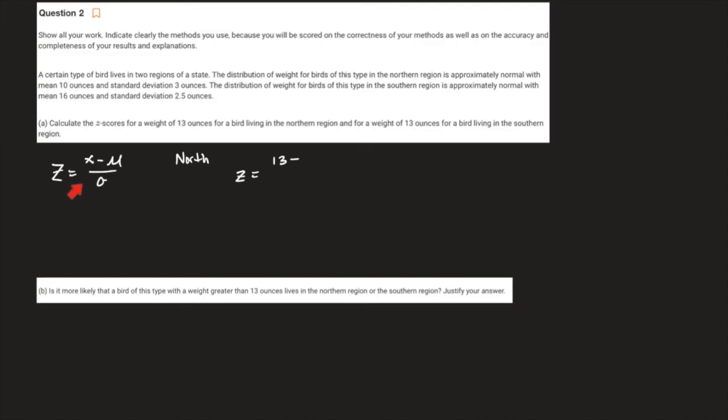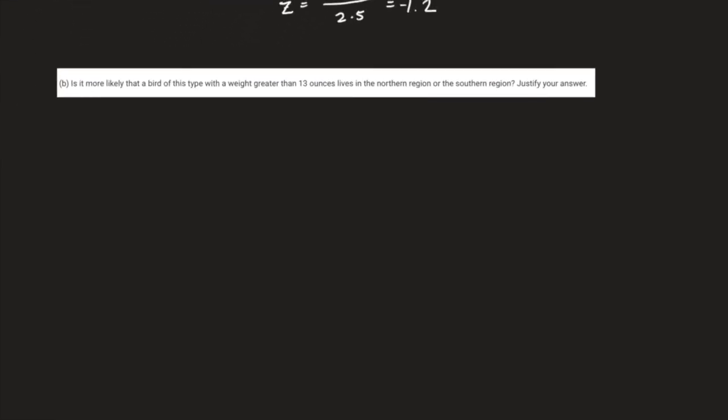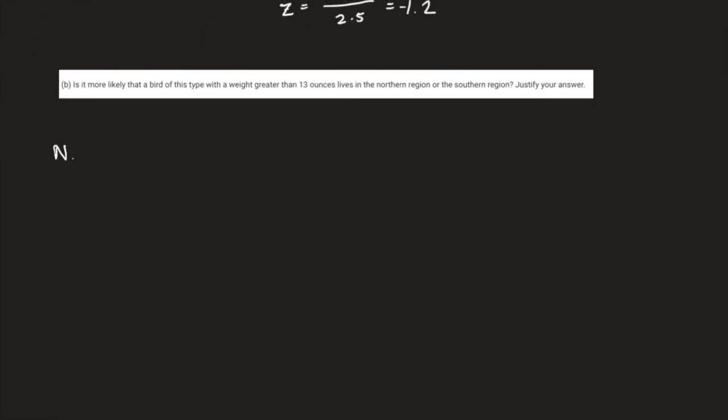You can see that right here. Then I'm going to calculate the north z-score, which would be 13 minus 10 divided by 3, which equals 1. If I bring down the southern data, we've got approximately normal with a mean of 16 and a standard deviation of 2.5. So here again, we're dealing with a 13-ounce bird, so 13 minus 16 divided by 2.5, and that's going to give me negative 1.2. So slightly farther away, but this one's below the mean.